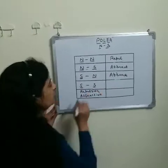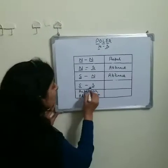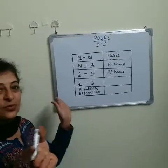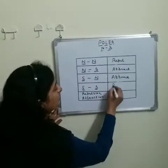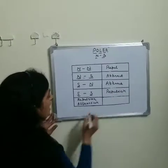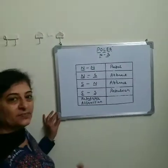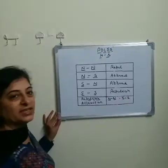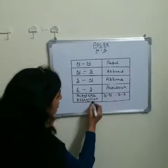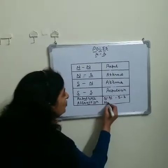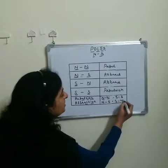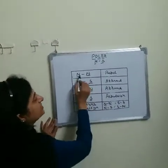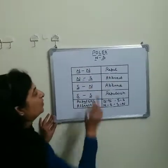So, two magnets repel each other when north and north poles face each other, or when south and south poles face each other. They attract each other when the north pole faces the south pole or the south pole faces the north. This proves that same poles repel and different poles attract each other.